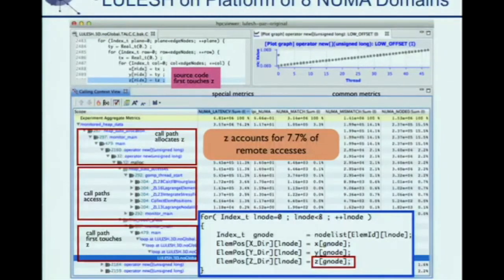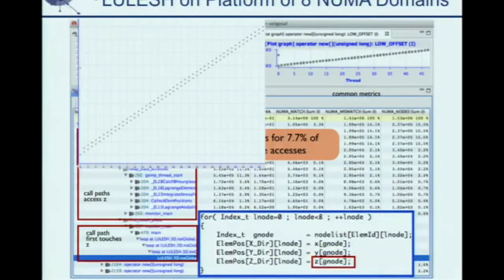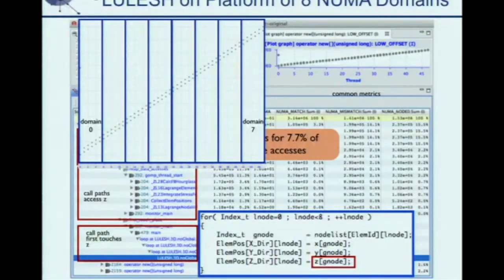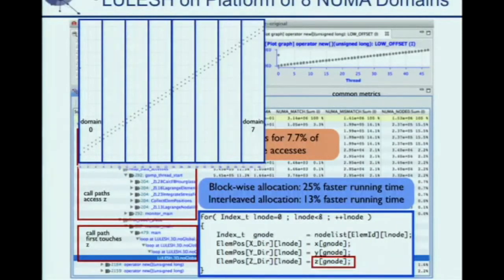From the top right pane, the access pattern analysis shows all the plots for different threads on the x-axis and different segments of data on the y-axis. The optimization is to segment all of array Z into eight NUMA domains and distribute one segment to each domain — not interleaved allocation, but block-wise allocation. We also optimize other problematic arrays besides Z. Using block-wise allocation, we got 25% performance improvement, which is much better than the interleaved allocation. This shows it's really important to do further data analysis, not only data attribution and collection.